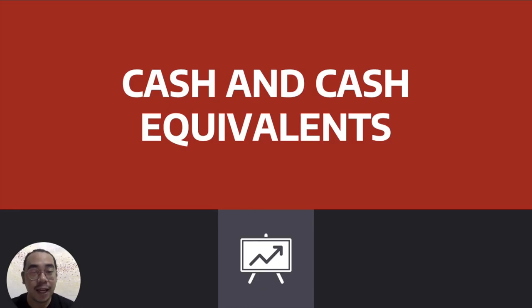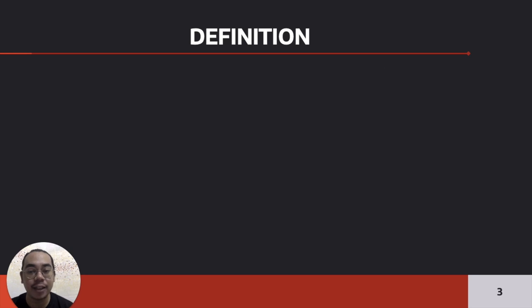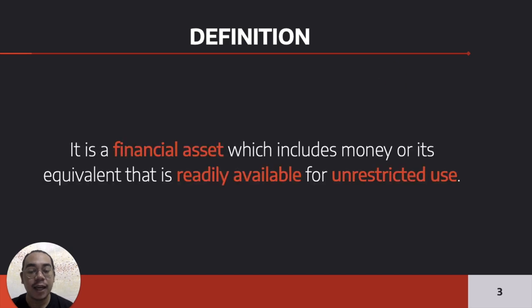We will be talking about cash and cash equivalents today, and we will be talking about how to account for cash and cash equivalents. We will start with cash. The definition of cash is it is a financial asset which includes money or its equivalent that is readily available for unrestricted use.